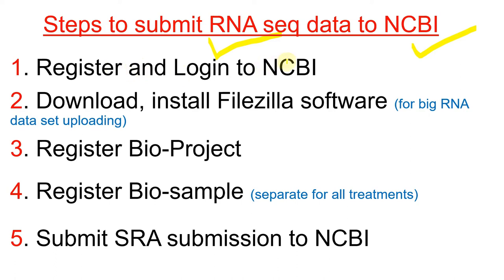The first step is that we should register ourselves at NCBI and then log in. The second step is to download and install FileZilla software. This is an FTP server software which can be used for transfer of data from your computer to the NCBI database. The NCBI database has been updated and you can directly upload your data, but if your data is big, you will need to use this software. The third step is the registration of a BioProject.